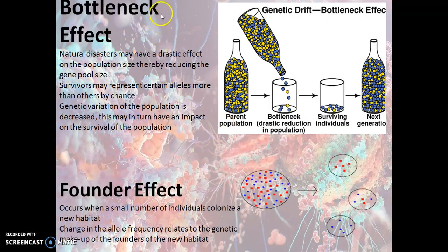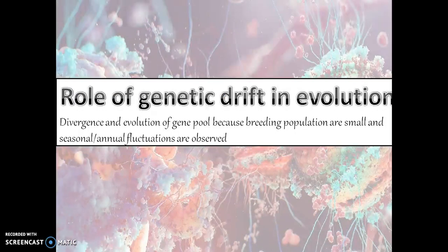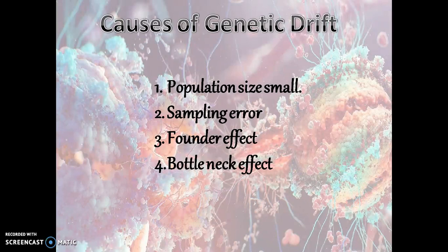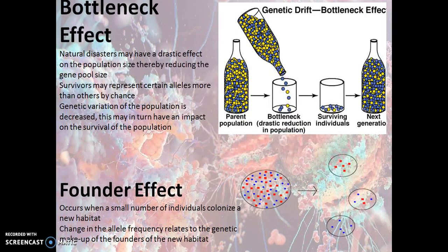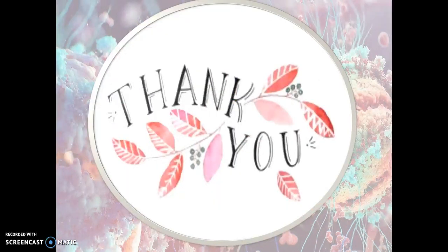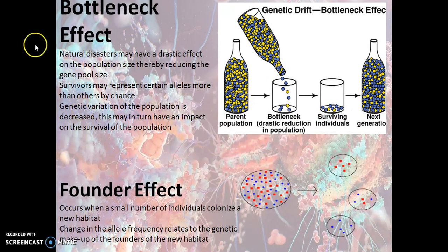Now we arrive at a very important key point of the genetic drift topic: the bottleneck effect and the founder effect. These are the causes of the genetic drift. The bottleneck effect occurs when a natural disaster may have a drastic effect on population size, thereby reducing the gene pool size. Survivors may represent certain alleles more than others by chance, and genetic variation of the population is decreased.